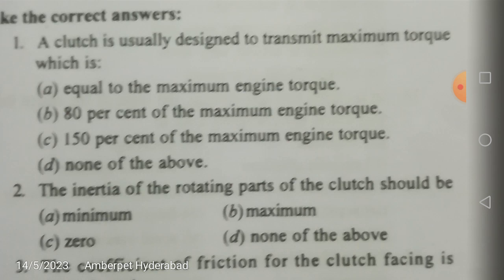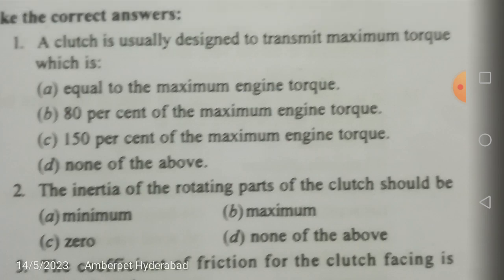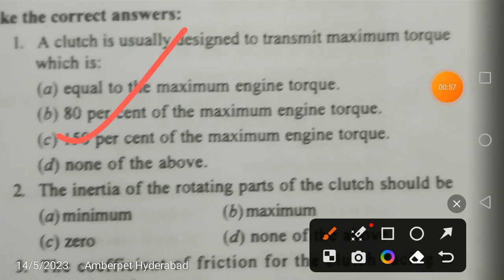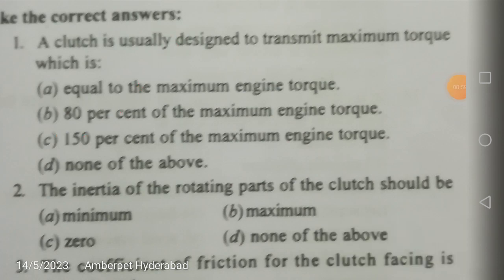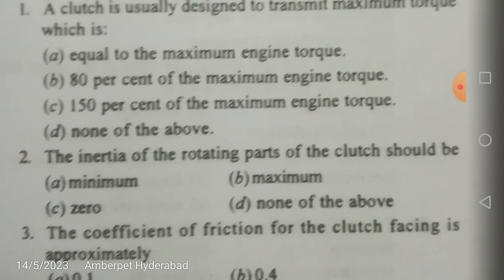A clutch is usually designed to transmit maximum torque — what is the correct answer? It is 150 percent of the maximum engine torque. From the equation P = 2πNT/60,000, where P is power, N is speed, and T is torque, you get the average torque. You have to design the clutch for 50 percent more than this average torque.